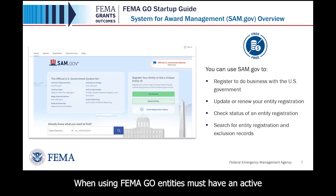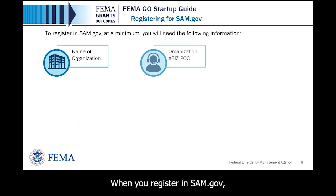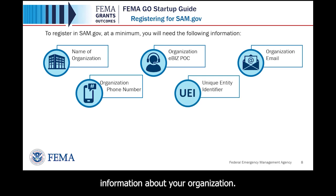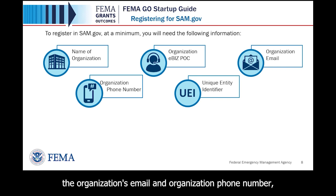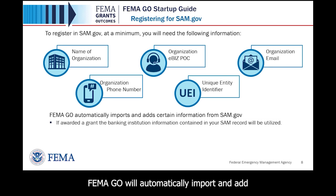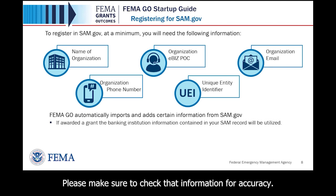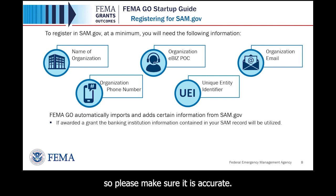When using FEMA GO, entities must have an active SAM.gov registration in order to apply for a FEMA grant. When you register in SAM.gov, at a minimum you will need to know your organization's name, the organization's eBiz point of contact, the organization's email and phone number, and the unique entity identifier, known as a UEI. Once you have registered in FEMA GO, it will automatically import and add certain information from your SAM.gov record. Please make sure to check that information for accuracy. If you are awarded a grant, the banking institution information contained in your SAM record will be utilized, so please make sure it is accurate.